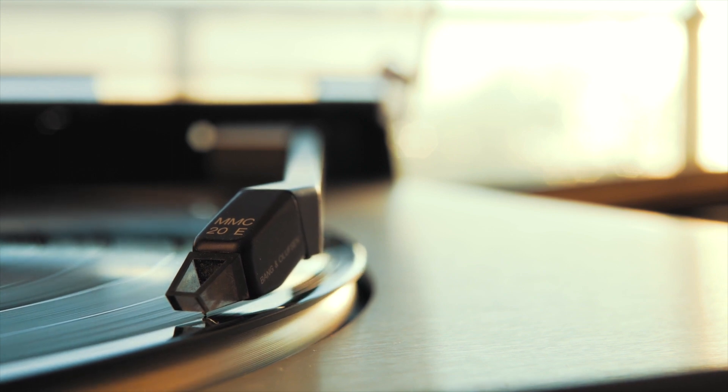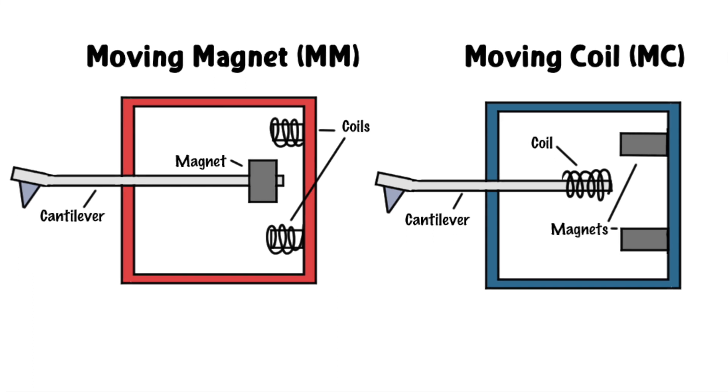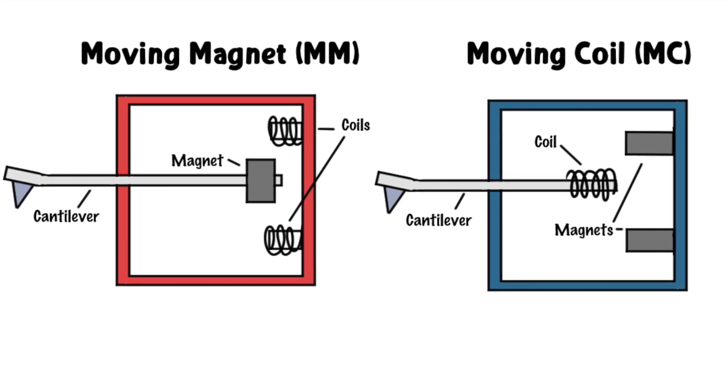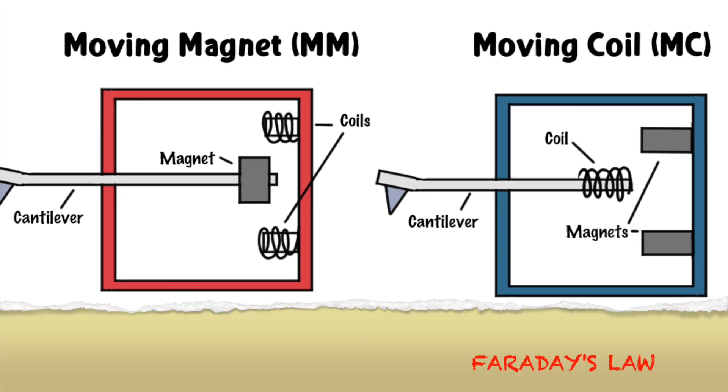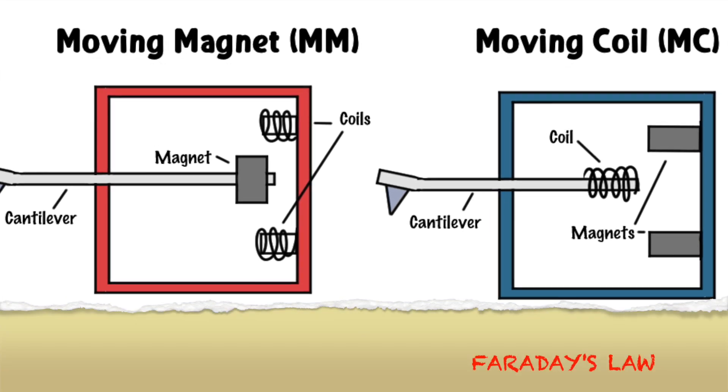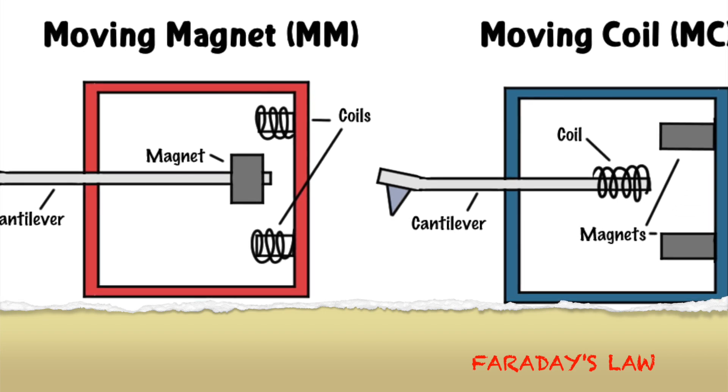Now, I said there are two types of cartridges. There's the MM and the MC. And how they generate that small signal involves the same electromagnetic law of physics known as Faraday's Law. It's a fun little rabbit hole to dive into if you're curious about physics. Let's dive into the moving magnet cartridge first.